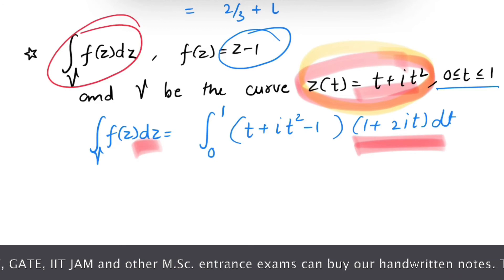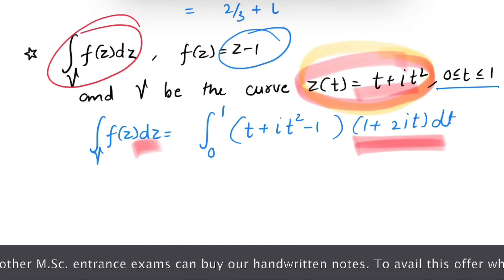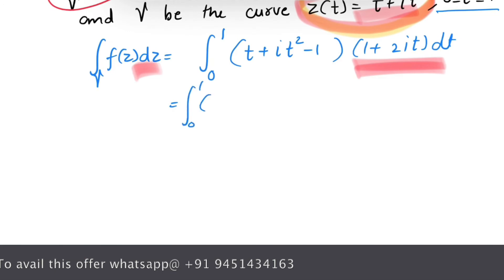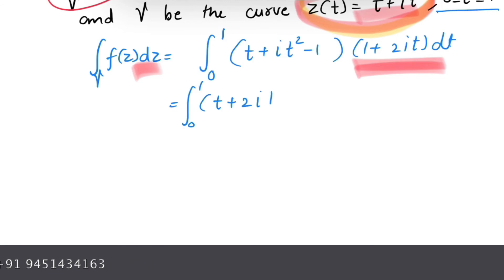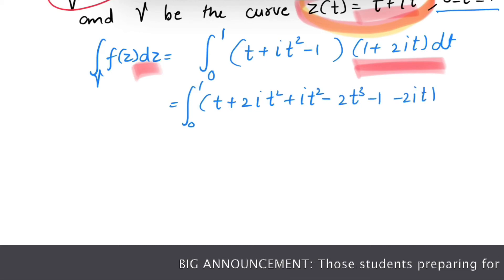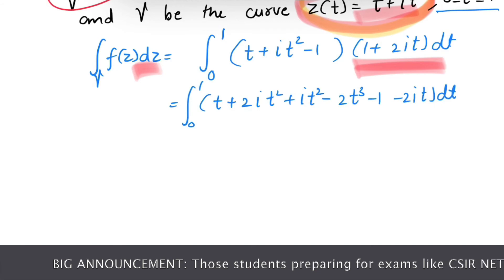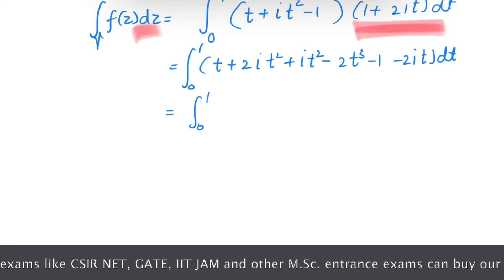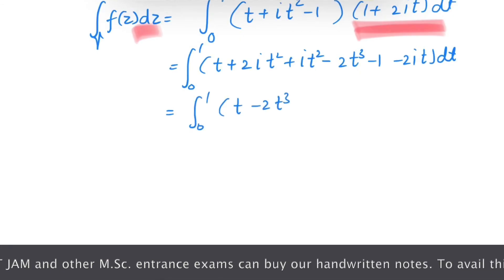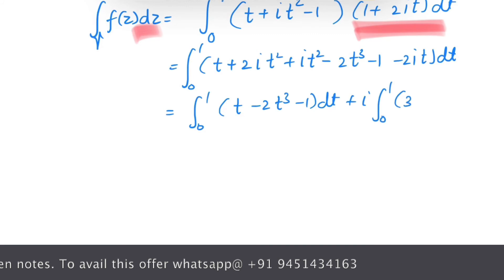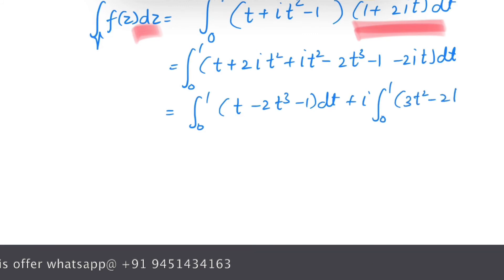Now let's simplify. After expanding the product, we have the integral from 0 to 1 of [t + 2i·t² + i·t² − 2t³ − 1] dt, which simplifies to the integral from 0 to 1 of (t − 2t³ − 1) dt plus i times the integral from 0 to 1 of 3t² − 2t dt.